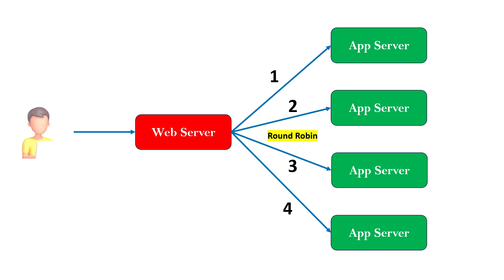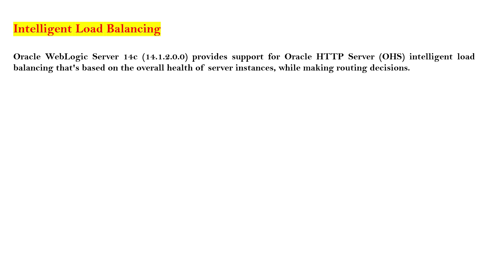This is called the round-robin algorithm for load balancing of requests, and this is the default algorithm supported by the web server. Specifically, this is applicable for your Apache web server and for OHS, which is the Oracle HTTP Server. This is the default behavior of your web server, which sends requests to the backend application servers in round-robin fashion.